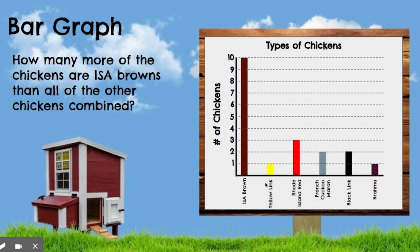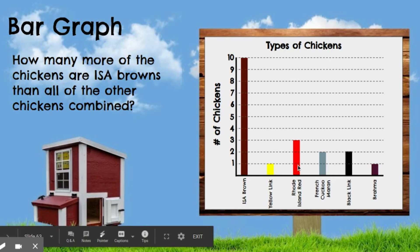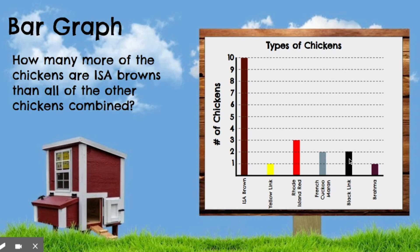Let's go to the next one. How many more of the chickens are ISA browns than all of the other chickens combined? Go ahead and pause and solve that. We count up all the other chickens: yellow was 1, Rhode Island red is 3 — that's 4 — plus 2 more is 6, plus 2 more is 8, plus 1 more is 9. So 9 chickens are not ISA brown chickens. Then 10 minus 9 is 1. So ISA browns have 1 more than all the other chickens combined.